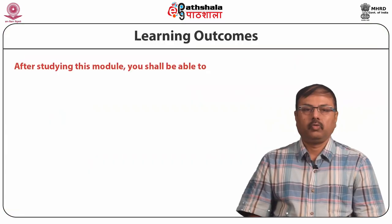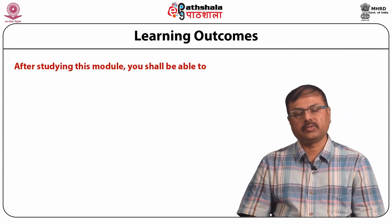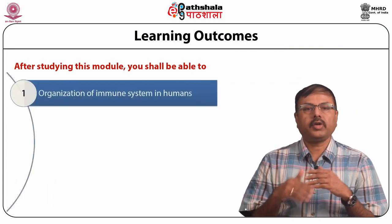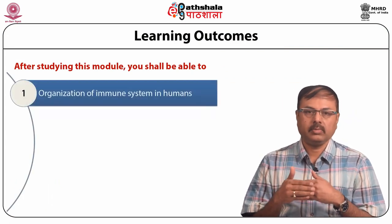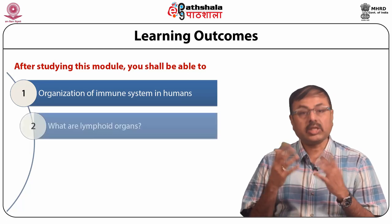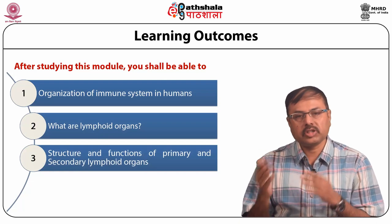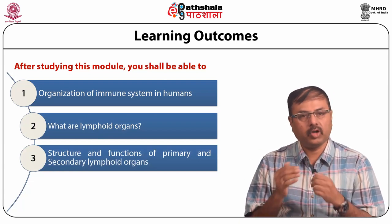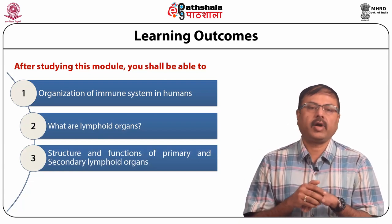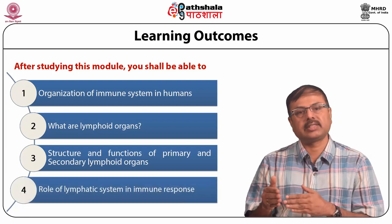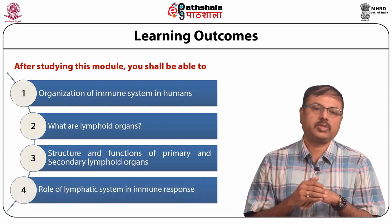Today we are going to discuss about a module: Organization and Structure of Immune System under the paper Immunology. The learning objectives of this module are: organization of immune system in humans, what are lymphoid organs, structure and functions of primary and secondary lymphoid organs, and the role of lymphatic system in immune response.